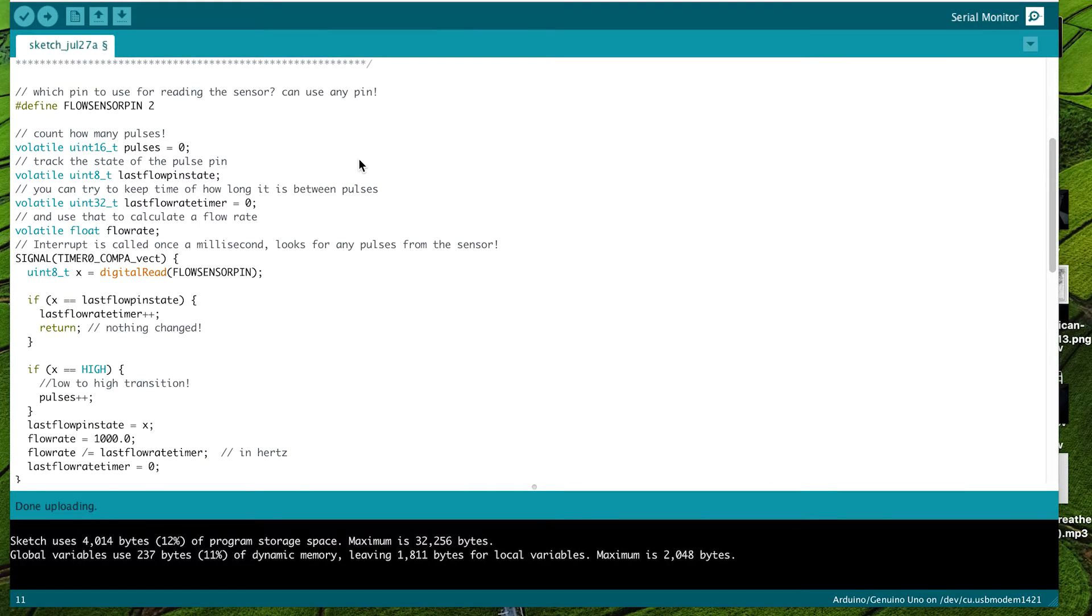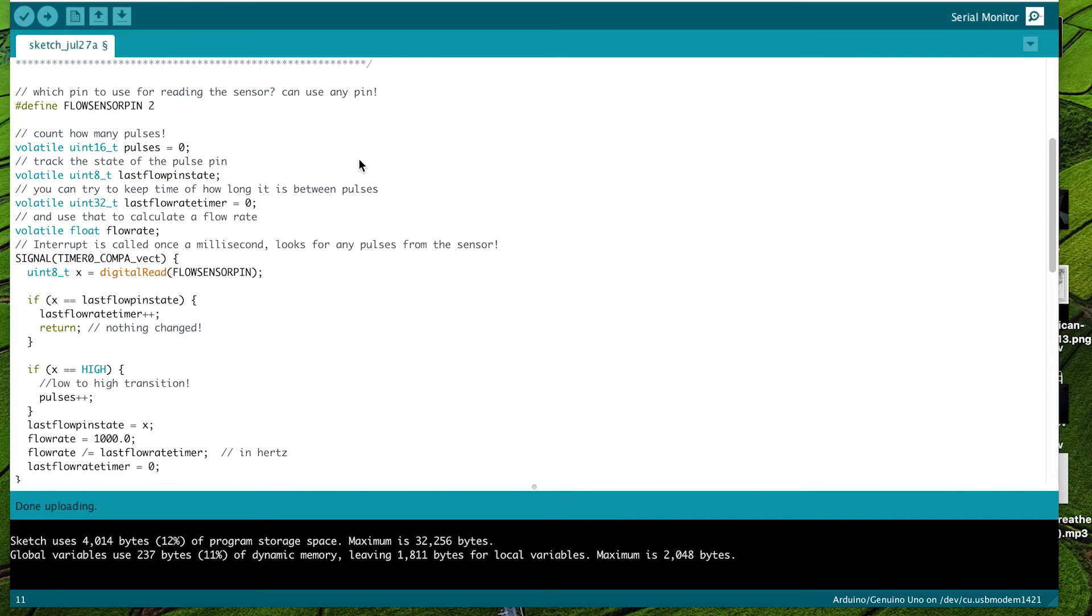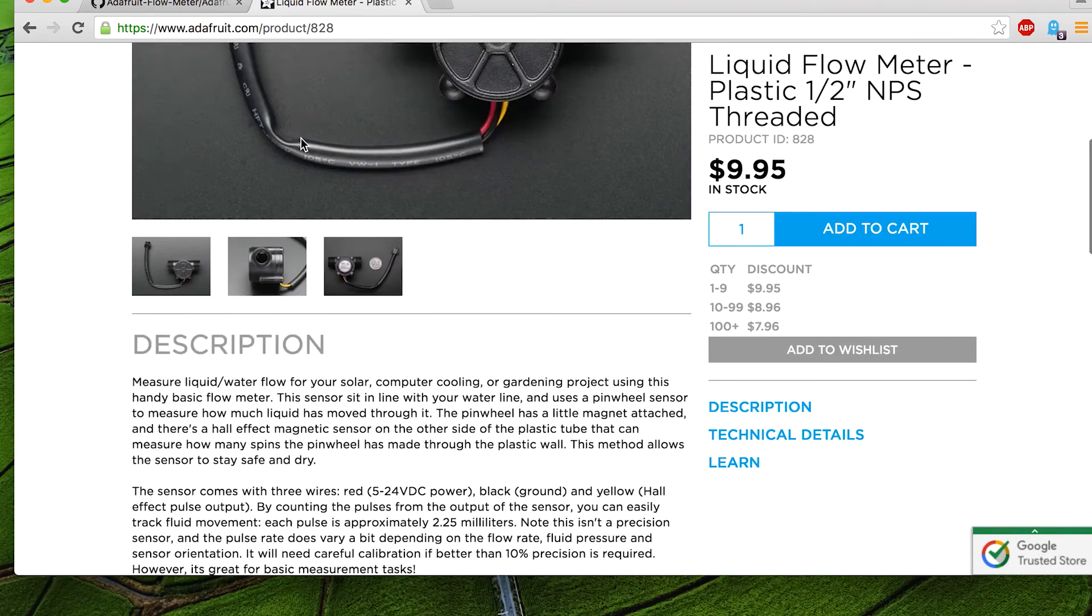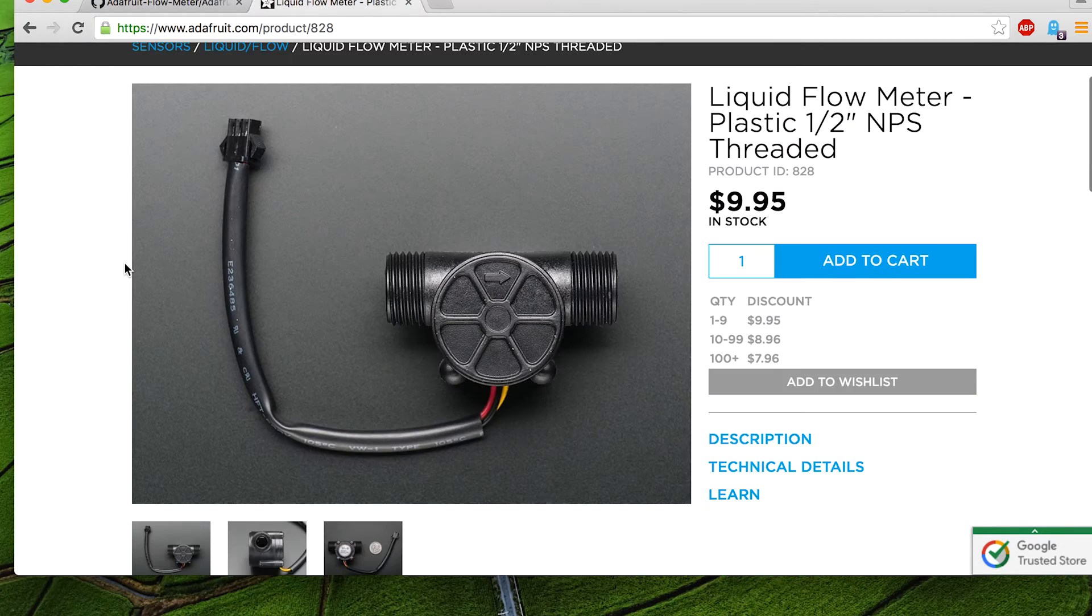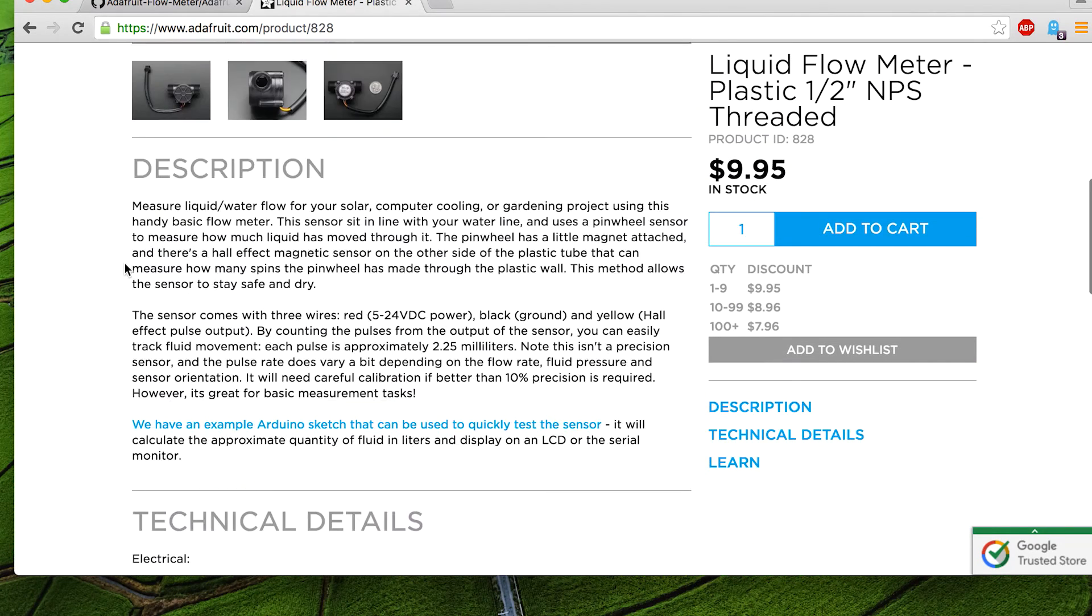I have some code here that's going to help us measure the flow through that flow meter. Just a disclaimer, I didn't write this code—I picked it up from online. This is the Adafruit product page. I bought this flow meter on Adafruit, and if you scroll down here, there's a link that takes you to GitHub where this block of code is.